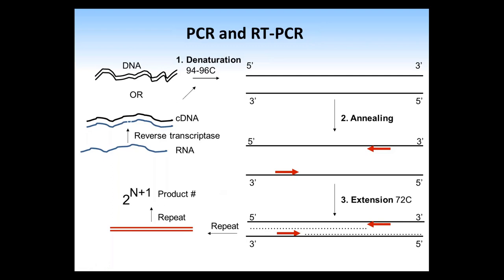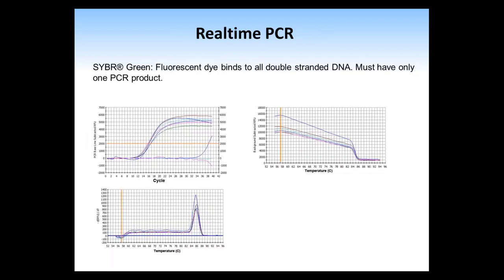The PCR revolution was enabled by the discovery of Taq polymerase, named after the bacterium Thermus aquaticus found in hot springs. This bacterium lives at near-boiling temperatures, so its polymerase is stable at high temperatures. This means you can add the polymerase once and run all repetitive PCR cycles without adding new enzyme, since it remains stable throughout.